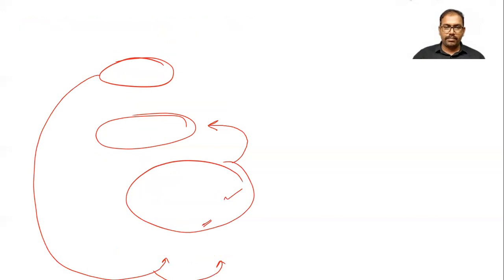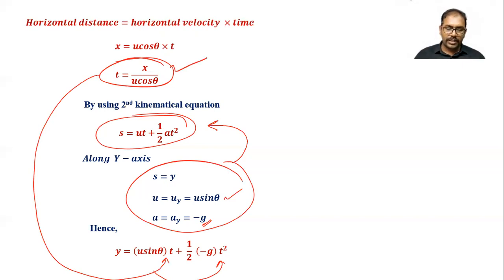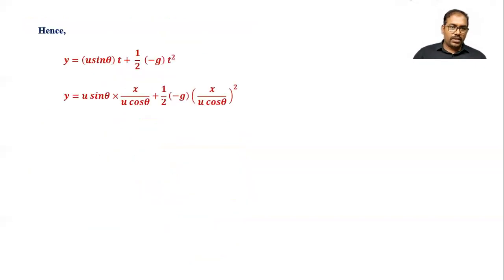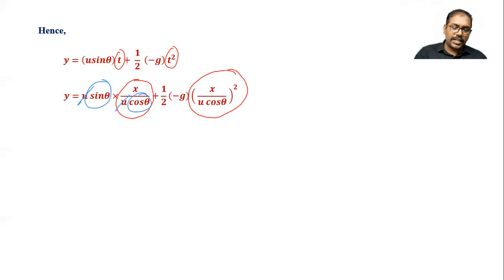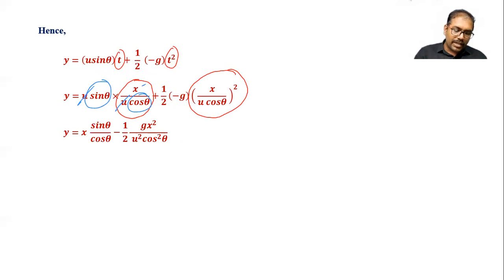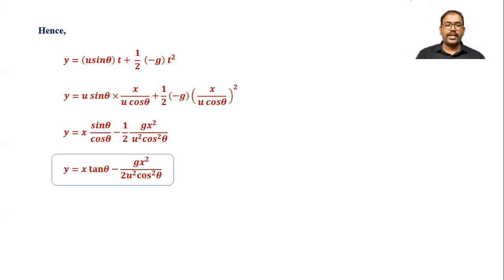Now we substitute t equals x divided by u cos theta into the equation. So y equals u sin theta times (x divided by u cos theta) plus one-half times (minus g) times (x divided by u cos theta) squared. Simplifying: the u's cancel, sin theta over cos theta gives tan theta, so y equals x tan theta minus g x squared divided by 2 u squared cos squared theta.